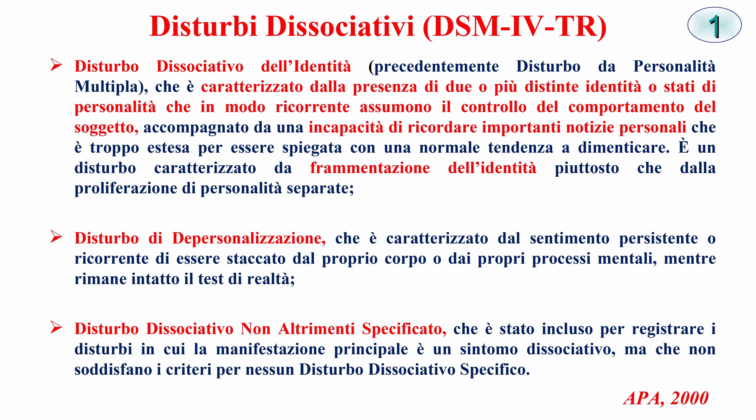Abbiamo poi il disturbo dissociativo dell'identità, altrimenti meglio conosciuto come disturbo da personalità multipla, ben descritto da Stevenson nello strano caso del Dr. Jekyll e Mr. Hyde, libro straordinario nel quale si narra la coesistenza di questi due opposti tipi di personalità nello stesso soggetto. Effettivamente qui abbiamo due distinte identità o stati di personalità che in maniera ricorrente assumono il controllo del comportamento del soggetto. Molto spesso tutto questo si associa all'incapacità a rievocare importanti notizie personali e a una vera e propria frammentazione dell'identità.